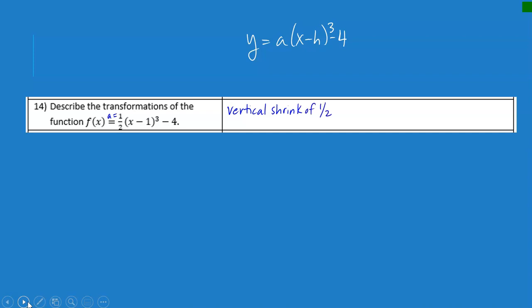I also have an h value of negative 1. Remember that we have to switch the sign, so this actually tells me that this graph is moving to the right one.